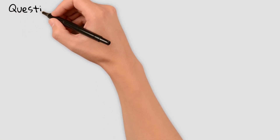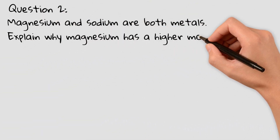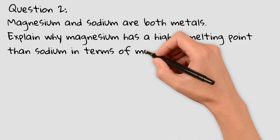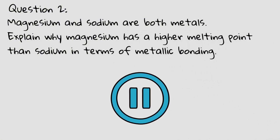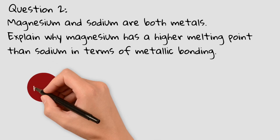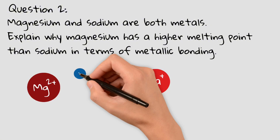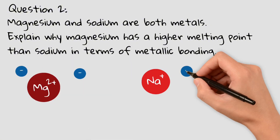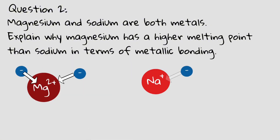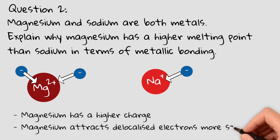Question 2: Magnesium and sodium are both metals. Explain why magnesium has a higher melting point than sodium in terms of metallic bonding. Magnesium forms Mg²⁺ ions while sodium forms Na⁺ ions. Since magnesium ions have a greater charge, they attract the delocalized electrons more strongly, creating stronger metallic bonds. As a result, more energy is needed to break the metallic bonds in magnesium, giving it a higher melting point than sodium.